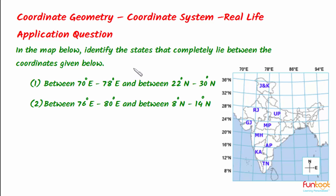Let's do a problem on the map. We have to identify the states that completely lie between the given coordinates: between 70 degrees to 78 degrees east, and between 22 degrees north to 30 degrees north.